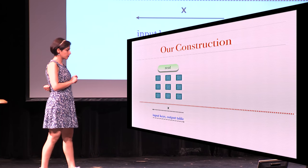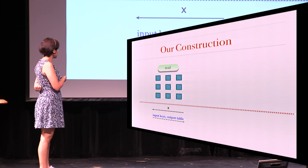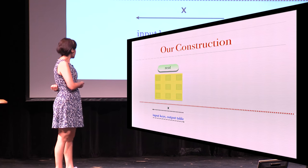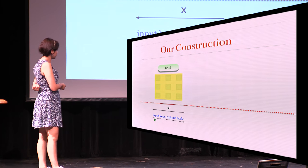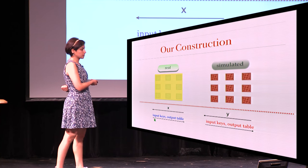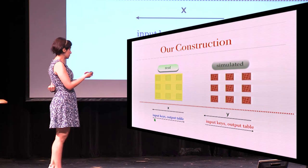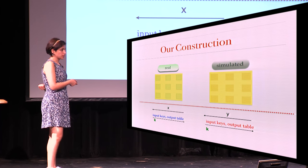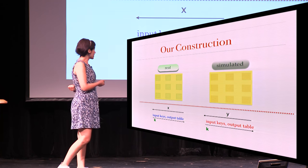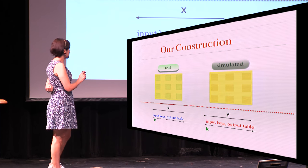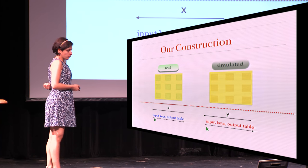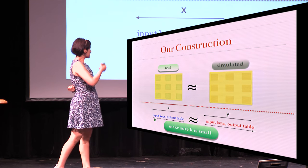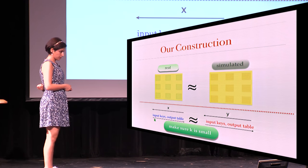Now that we have this encryption scheme, we're going to encrypt the garbling of Yao's garbled circuit and give the key in the online phase. What does the simulator do? It does the exact same thing, just using the simulated garbled circuit. Both of them use the honest procedure. Where we use the simulated procedure for the encryption is in the indistinguishability proof.